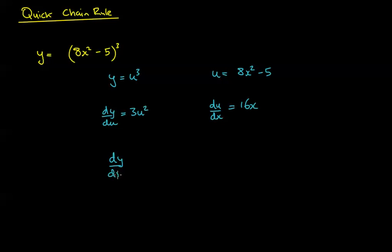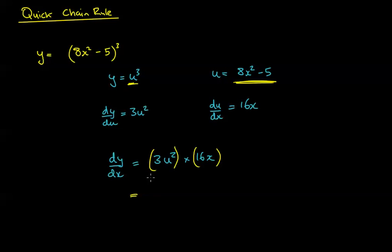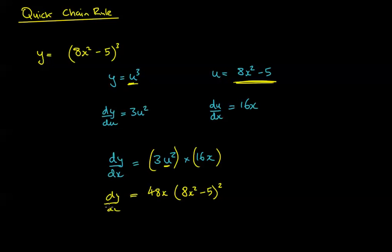Then we multiply these, so dy by dx equals 3u squared times 16x. Notice that 3u squared is just the derivative of the bracket imagined as a letter — the 3 comes down, the power is reduced by 1 — times the derivative of the inside. Cleaning it up: 3 times 16 is 48x, and replacing u squared back gives us (8x squared minus 5) to the power of 2. So dy by dx equals 48x(8x squared minus 5) squared. Remember to replace u back at the very end.